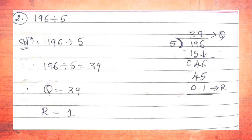For dividend 196 and divisor 5, we get remainder 1 and quotient 39. Therefore, 196 ÷ 5 = 39, where Q = 39 and R = 1.